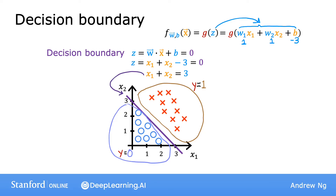This line is the decision boundary: if the features x are to the right of this line, logistic regression predicts 1, and to the left it predicts 0. This is the decision boundary for logistic regression when w1, w2, and b are 1, 1, and negative 3. Of course, with a different choice of parameters, the decision boundary would be a different line.